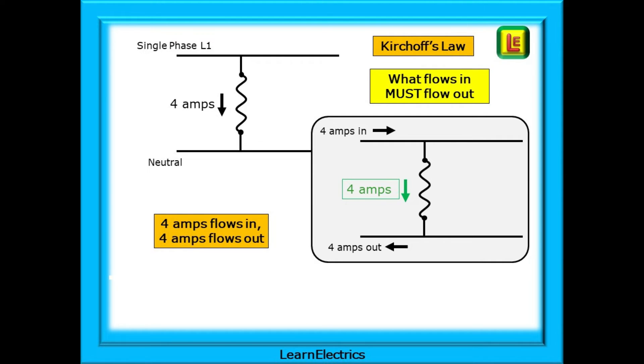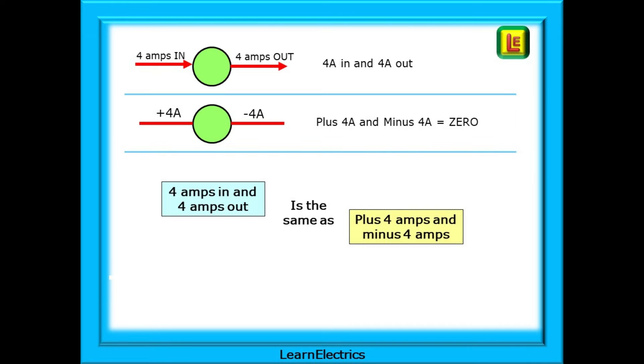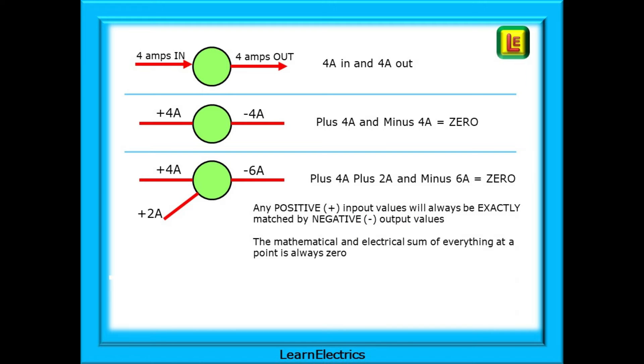If 4-amps flows into an appliance, then 4-amps must flow out. We can show it on this simple sketch. 4-amps in and 4-amps out. Result? Zero. Or we can say plus 4-amps and minus 4-amps is zero. It doesn't matter what flows in and from where. What flows out will always be the same. Any positive values will always be exactly matched by negative values. The mathematical and electrical sum of everything at a point is always zero.